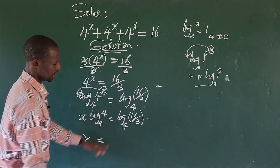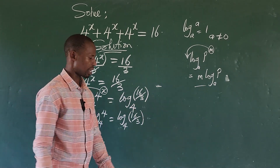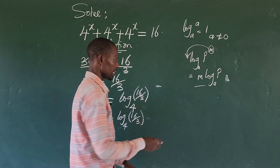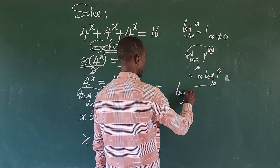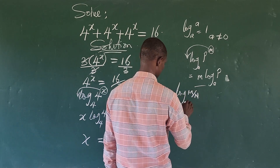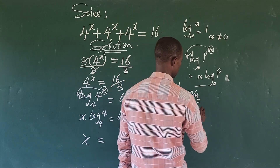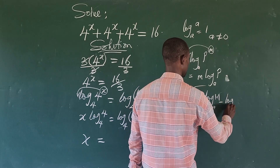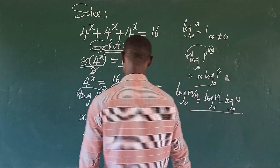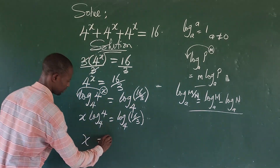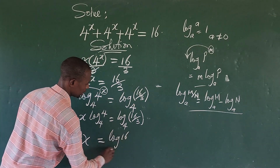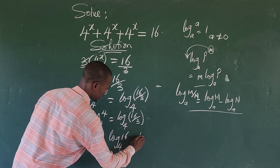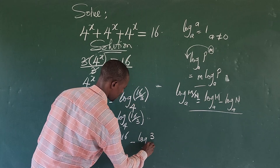So we have x equal to log base 4 of 16 over 3. Let's look at the division rule of logarithms. It says that if you have log base e of m over n, this is equal to log base e of m minus log base e of n. So we can rewrite this as log base 4 of 16 minus log base 4 of 3.